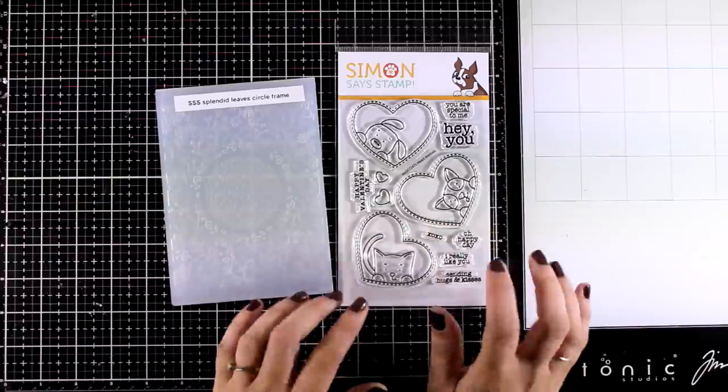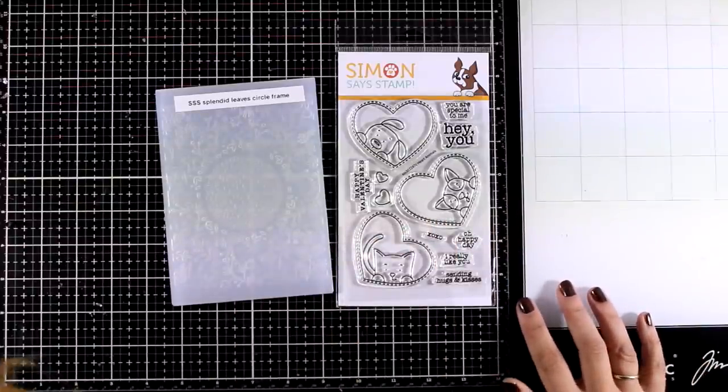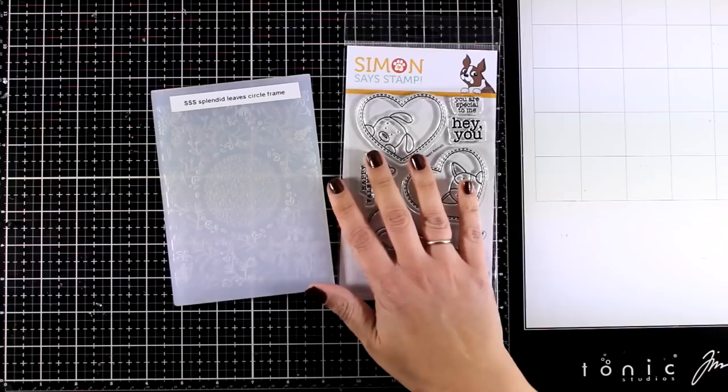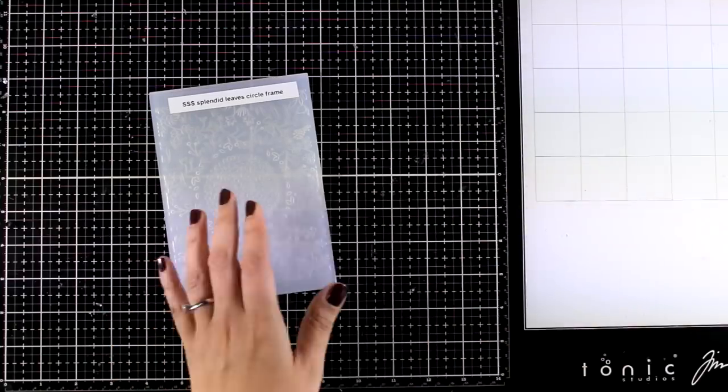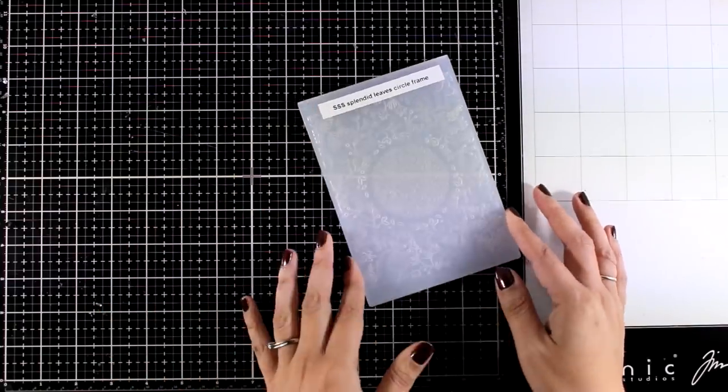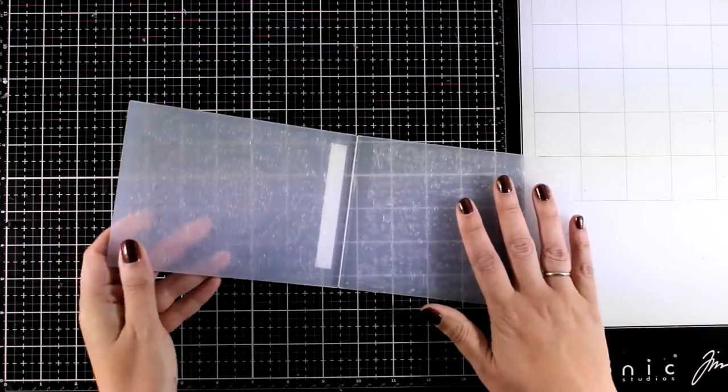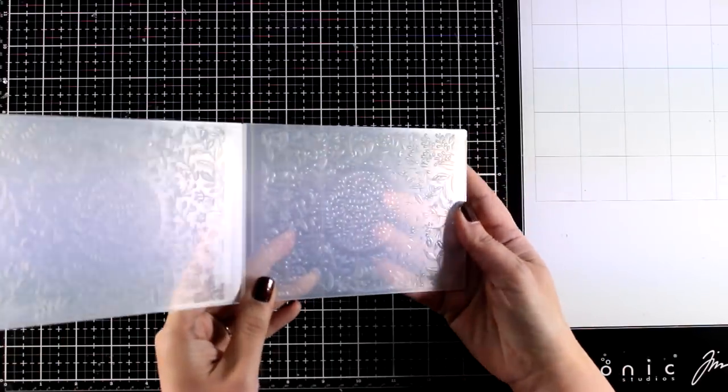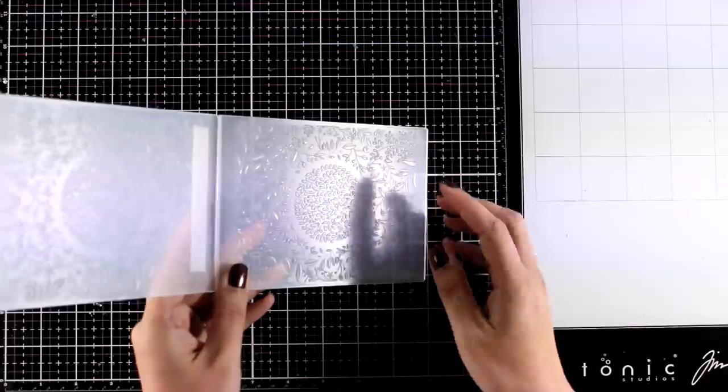Today I'm going to show you a completely different idea and I'm going to combine this stamp set with an embossing folder and this is the Splendid Leaves circle frame. I'm going to open it up so you can see. Inside you will find a lovely foliage detail and there is a circle as well.